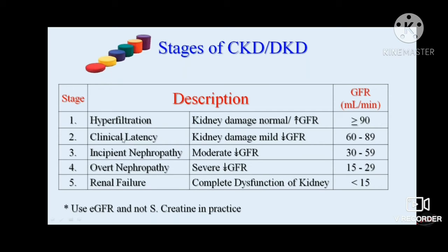In overt nephropathy, GFR starts declining and stands between 60 to 89 ml/min. In this latency stage or overt nephropathy there is macroalbuminuria, and blood pressure can be normal in this clinical latency or overt clinical latency stage.